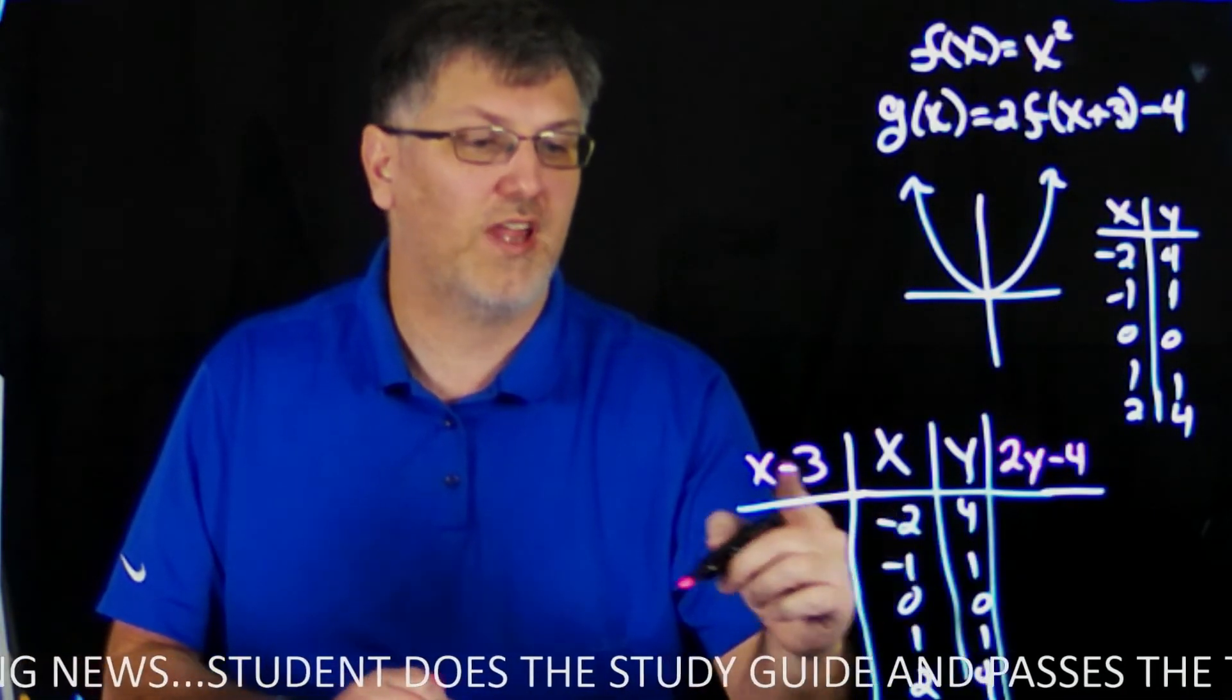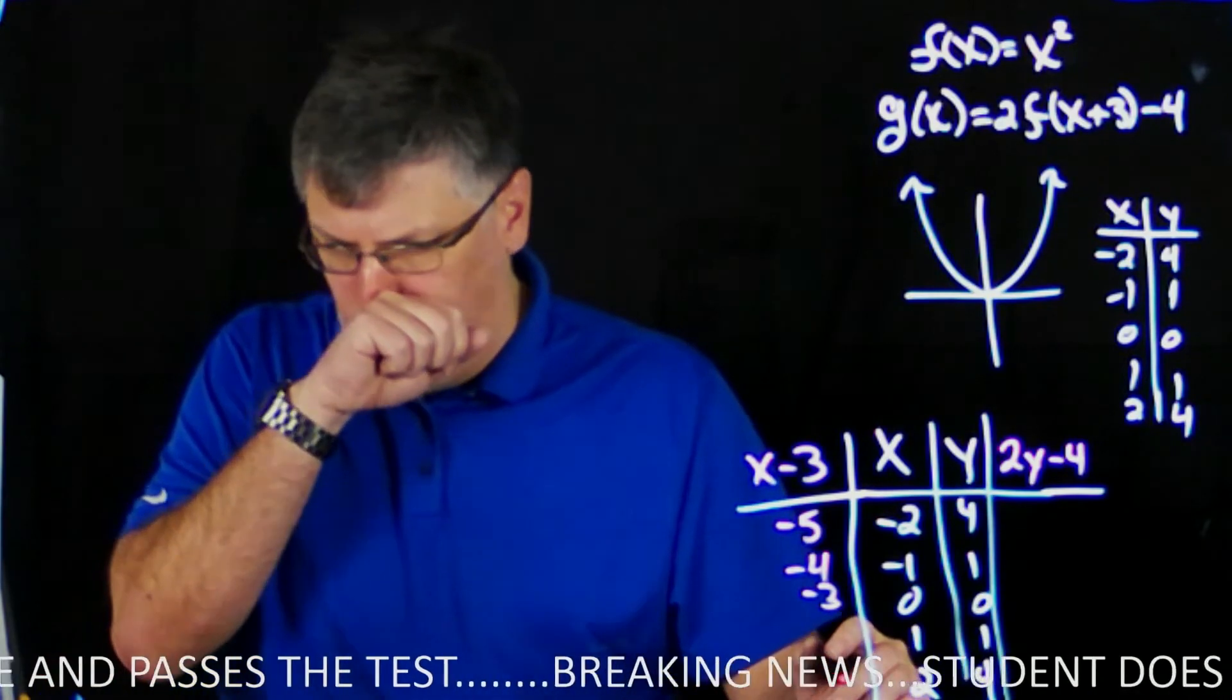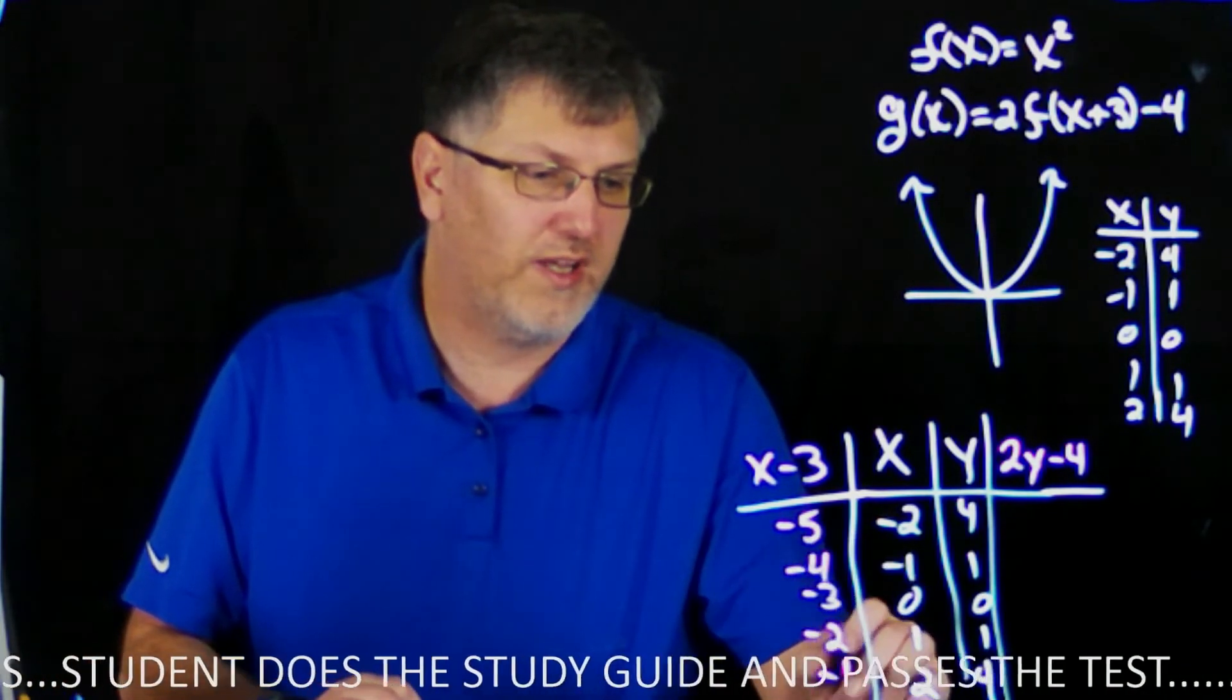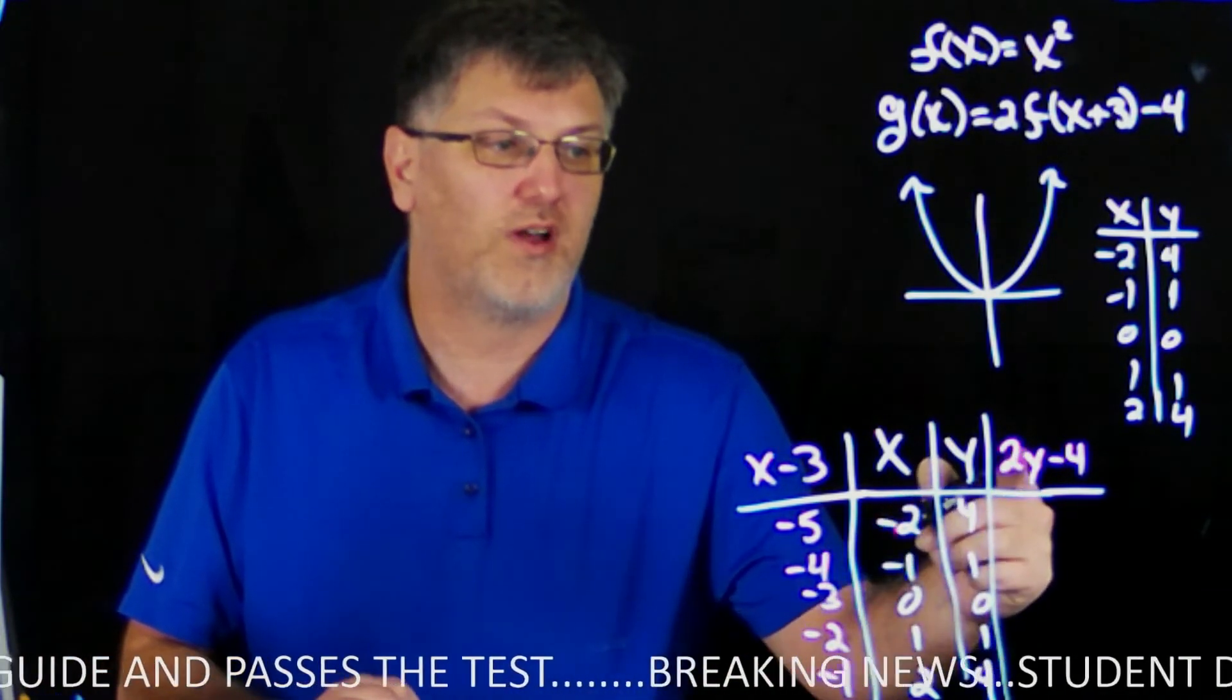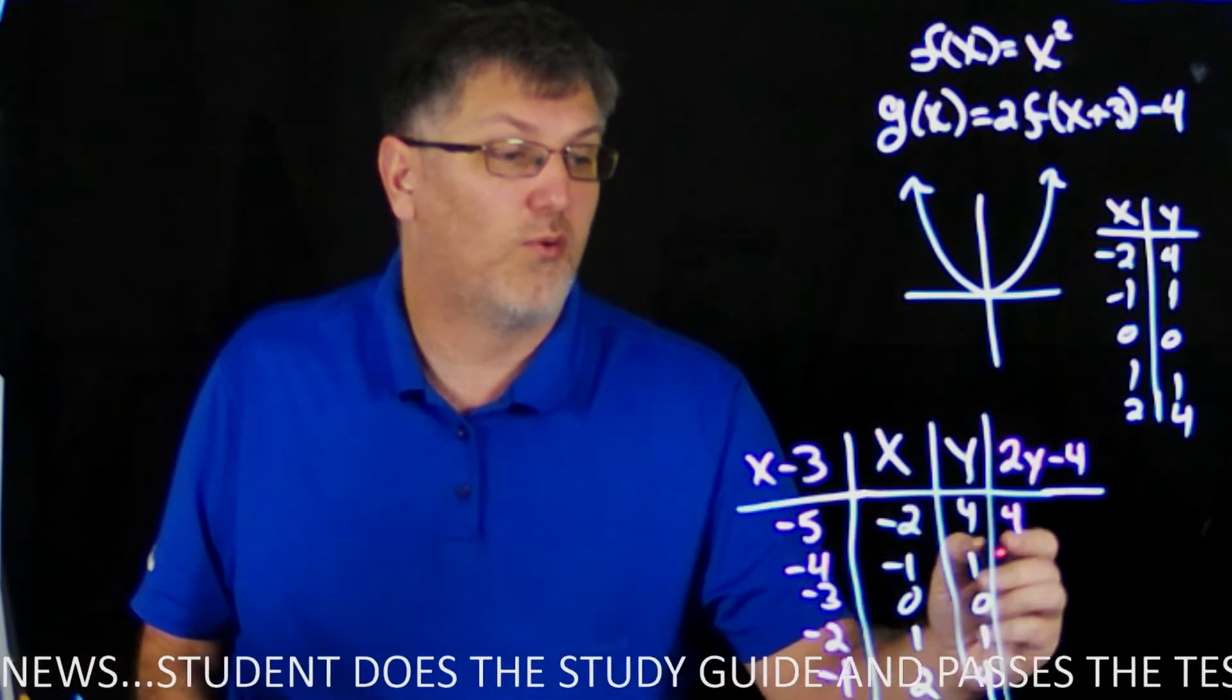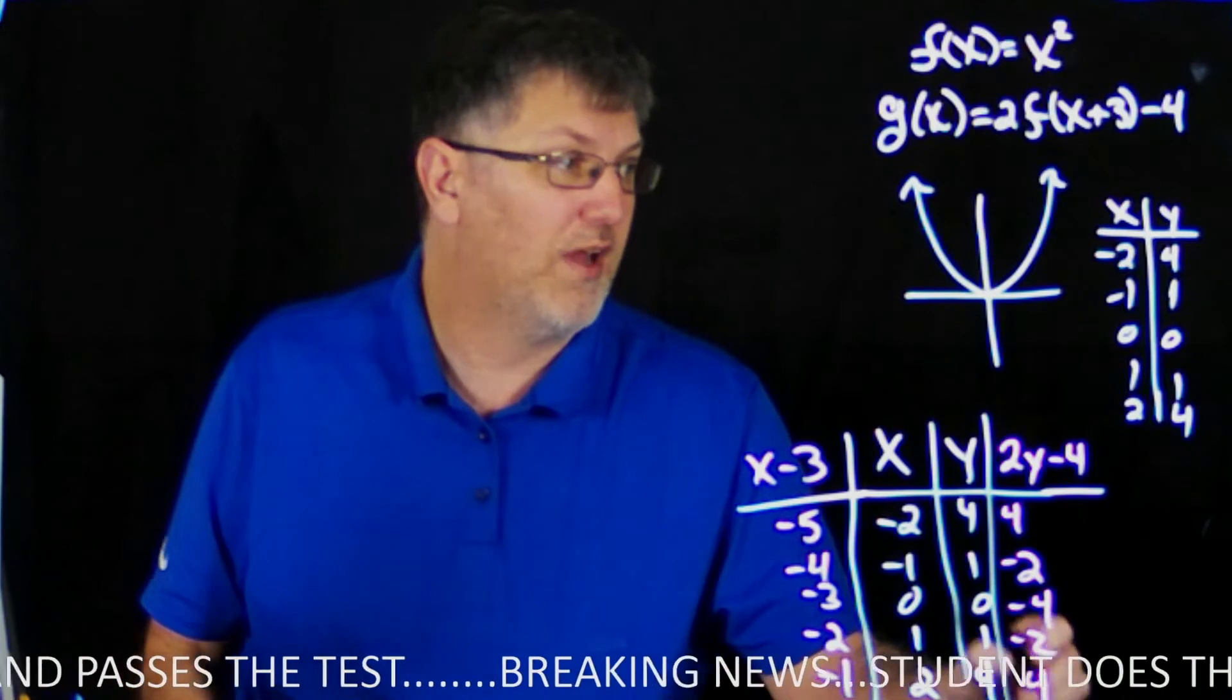All we do is plug in our numbers. -2 - 3 gives me -5. Then -1 - 3 gives me -4, then -3, -2, and -1. I'm going to do the same thing with my y values. 4×2 is 8, 8-4 gives me 4. 1×2 is 2, 2-4 is -2. 0 gives me -4. And then we have symmetry, so we have -2 and 4. So now we have all these beautiful points.